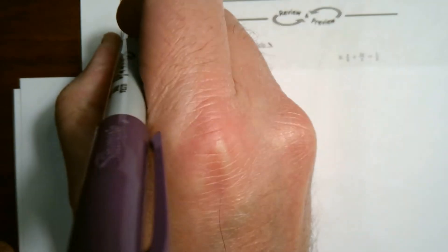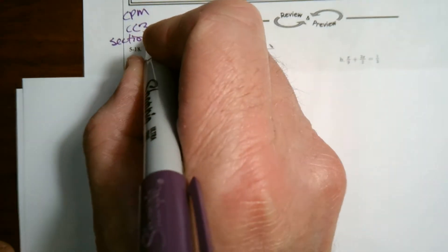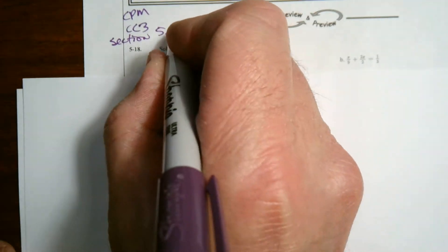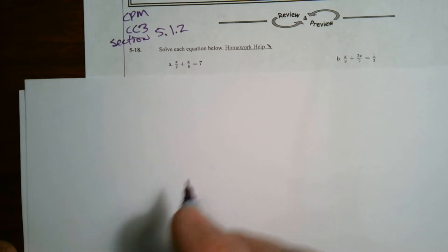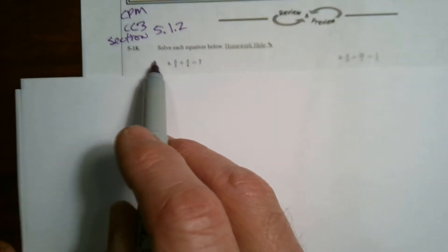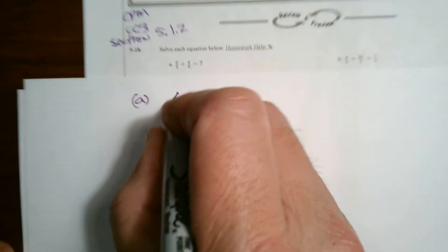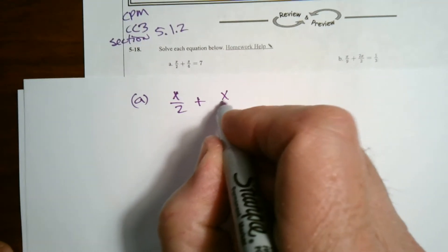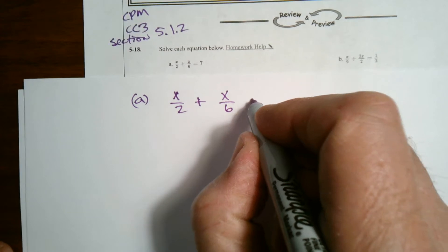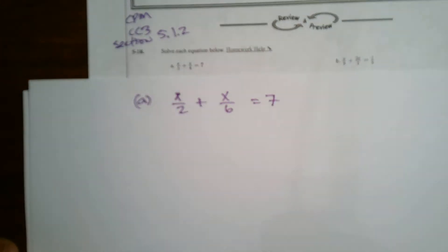This, by the way, is CPM course three, and this is section 5.1.2. So if I have an equation, I'm going to rewrite this so we can see it bigger. It's x divided by 2 plus x divided by 6 equals 7. So there's my equation.